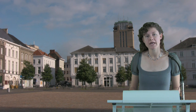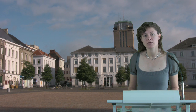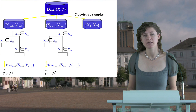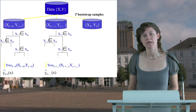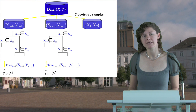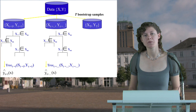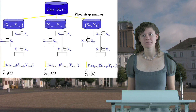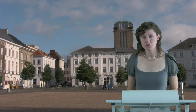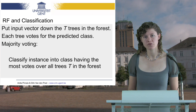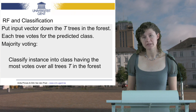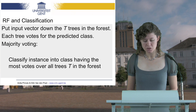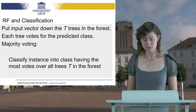This whole procedure is repeated for every bootstrap sample drawn from the original dataset. For t equals 2, again a decision tree is built on this bootstrap sample, and the splitting at each node is selected out of a random subset of the original feature space. This again delivers a decision tree built on the second bootstrap sample, and every instance of the second bootstrap sample is assigned a predicted class. This procedure is repeated for every bootstrap sample. In order to classify an instance using the random forest, we put the input vector down the t trees in the forest. Each decision tree votes for the predicted class of the instance, and we use majority voting to obtain the final predicted class — classifying an instance into the class having the most votes over all trees t in the forest.